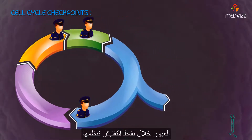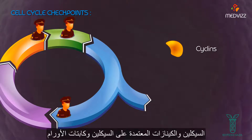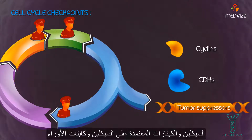Progression through checkpoints is regulated by cyclins, cyclin-dependent kinases, and tumor suppressors.